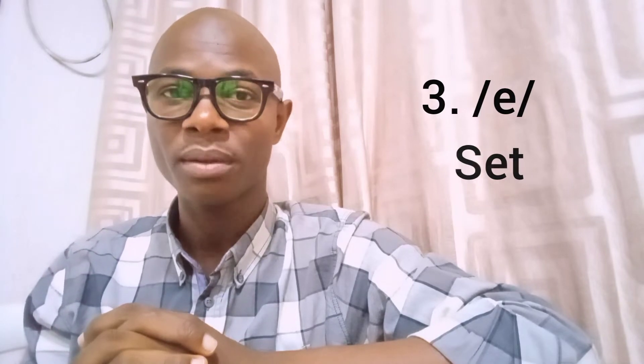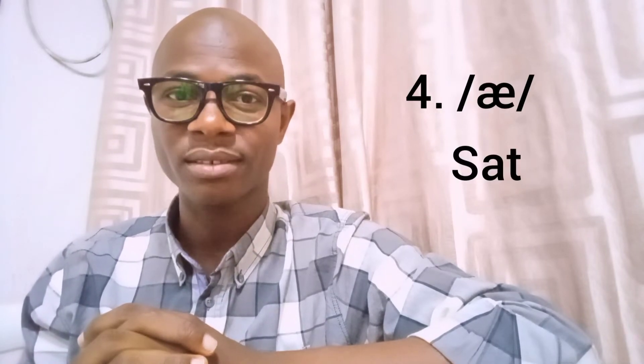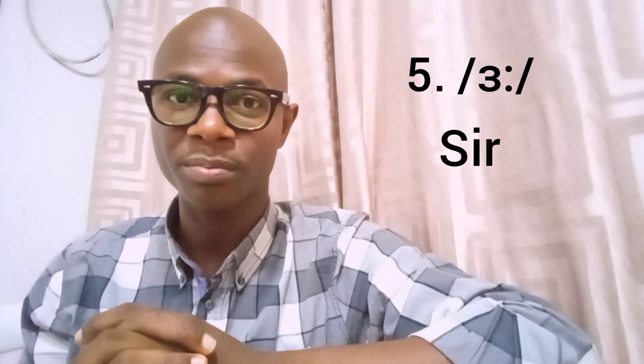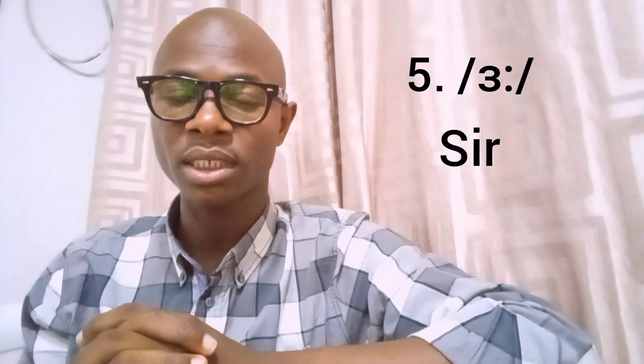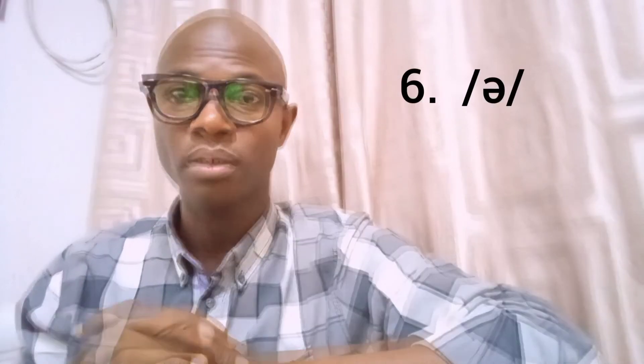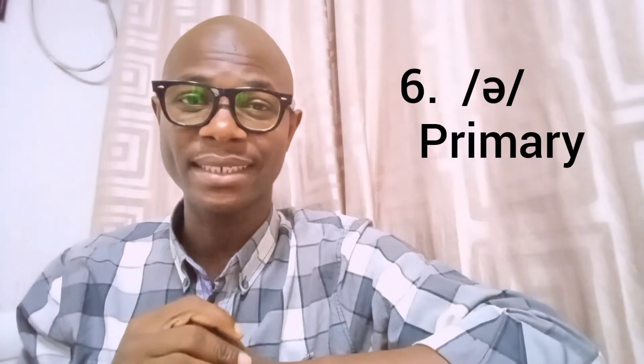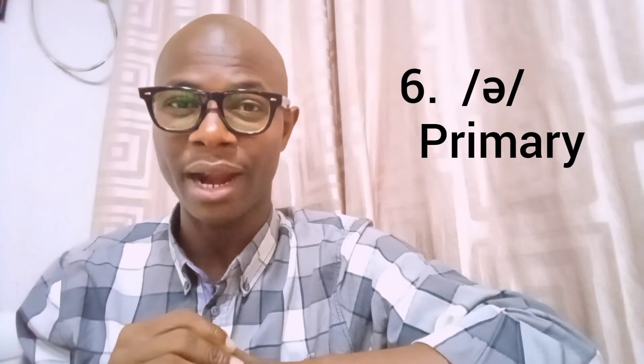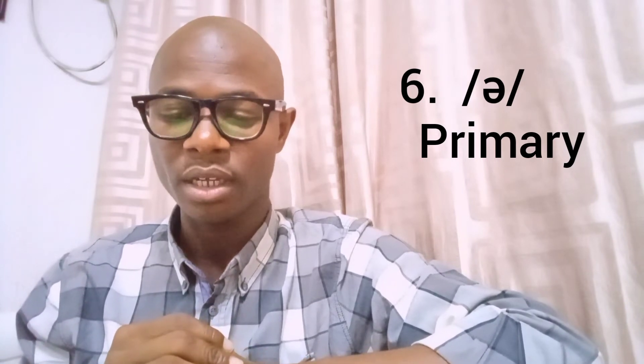Number four: A as in 'sat.' Number five: the ER sound, as in 'sir.' Number six: the schwa sound, as in 'primary' — the letter A there is a schwa in 'primary.' Number seven: the short U sound, as in 'monkey.'